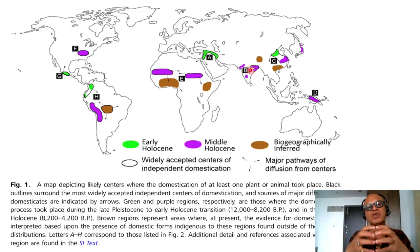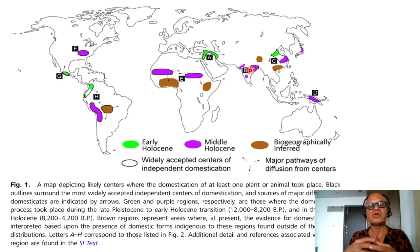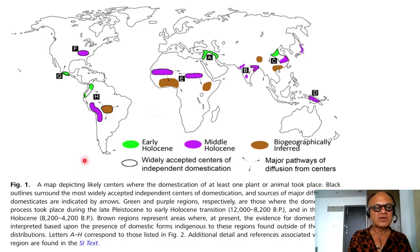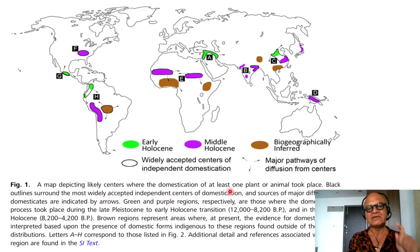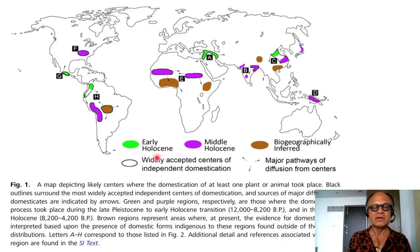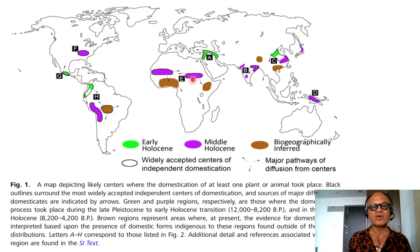Do wet regions make communities independent of each other because they are self-sufficient, or do they still need to get something like salt from somewhere else if they are beginning to cook food? Keeping that in mind, this map depicts likely centers where domestication of at least one plant or animal took place. Black outlines surround the most widely accepted independent centers, and sources of major diffusion of domesticates are indicated by arrows. These are, of course, hypotheses or inferences.